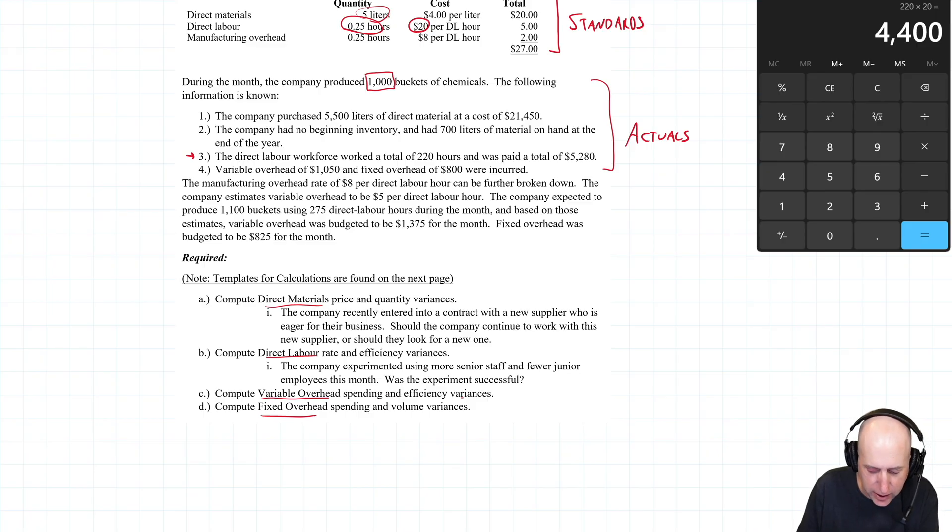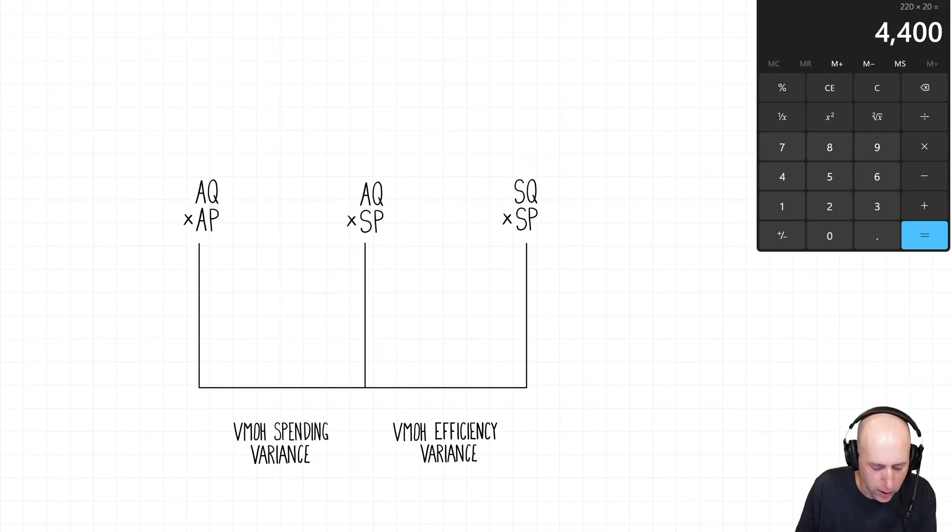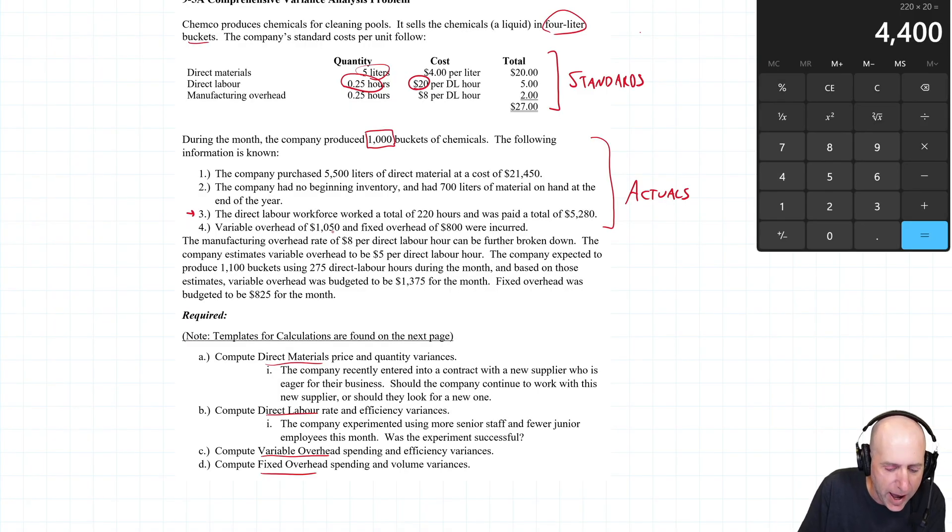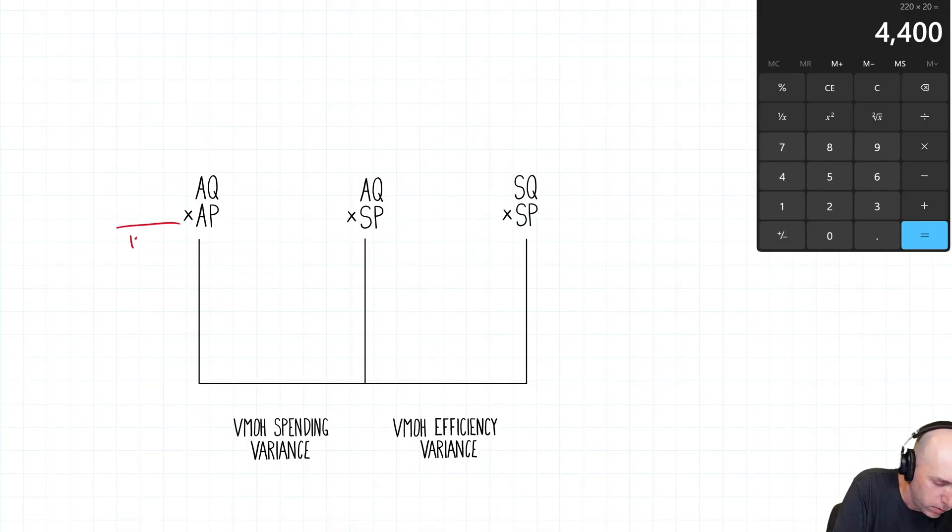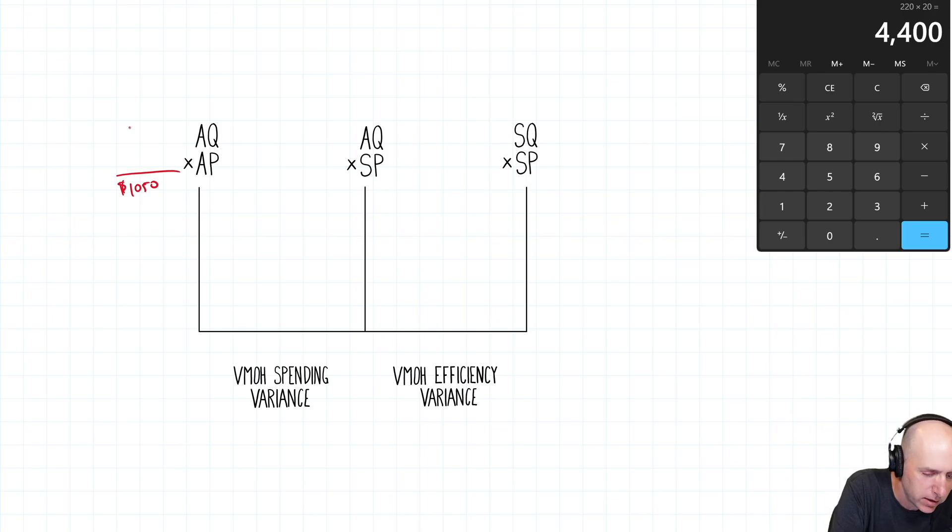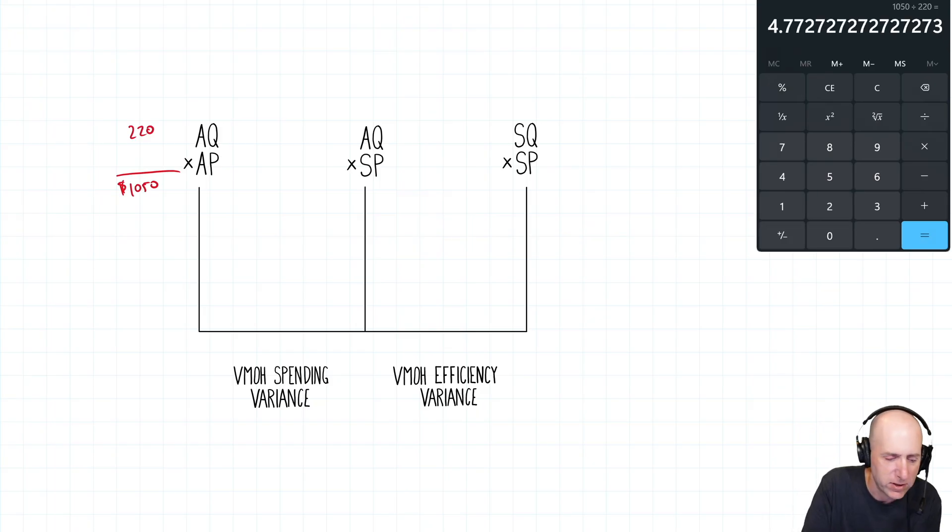Let's continue. Compute variable overhead spending and efficiency variances. So again, this will be very similar to our labor variance, AQAP, AQSP, SQSP, and the queues, because it told us our overhead was driven by labor hours. So the quantities are all labor hours. So they're all the same as they were up here. So it says variable overhead was $10.50. That's the actual variable overhead cost, $10.50.